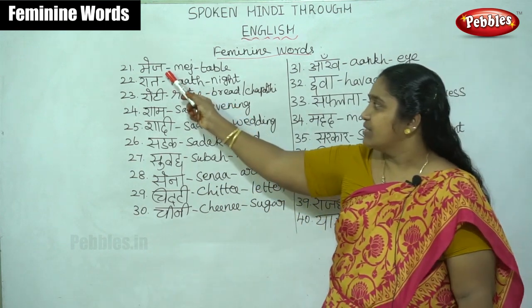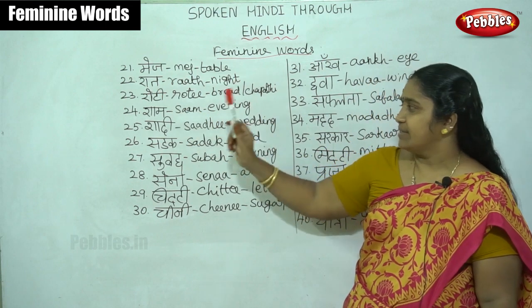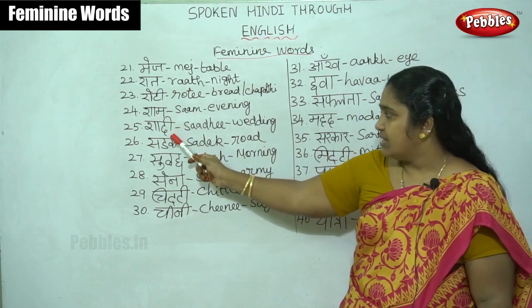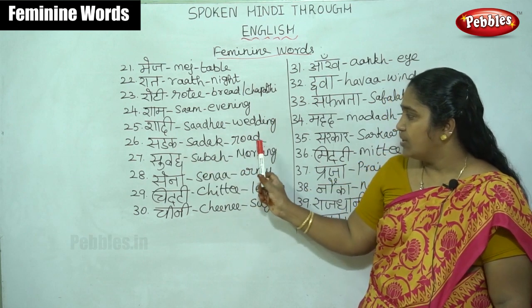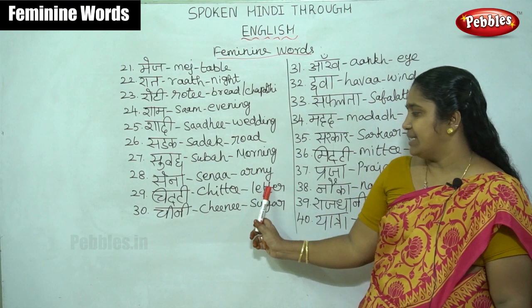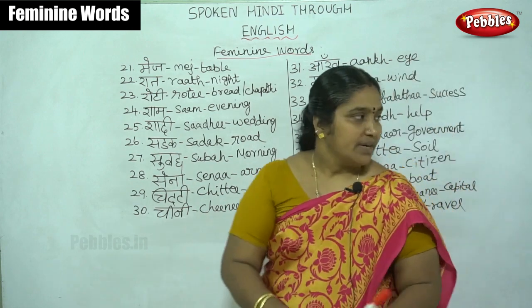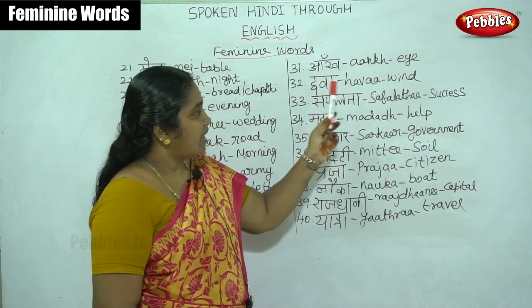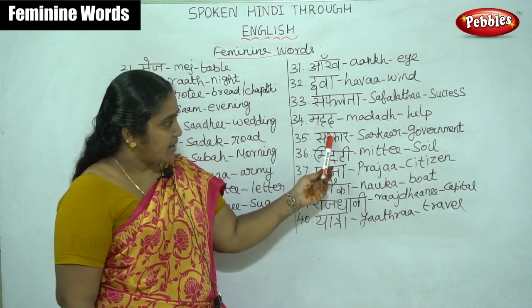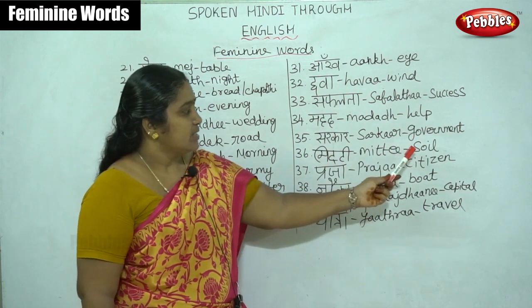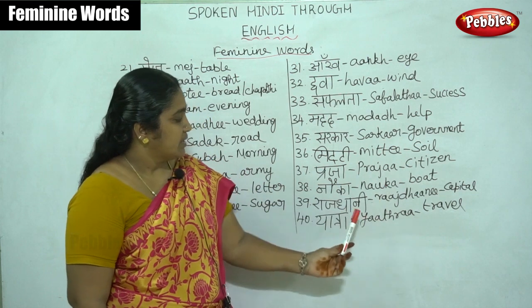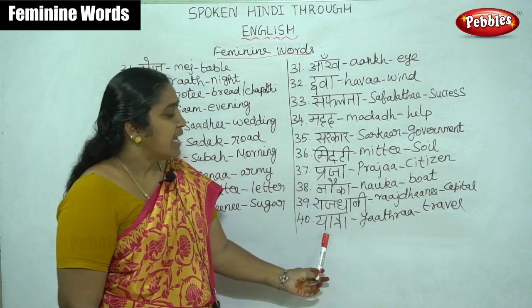Once again, let's review all the feminine words: mage (table), rath (night), roti (chapati), sham (evening), shadi (wedding), sadak (road), subah (morning), sena (army), chitti (letter), chini (sugar), ankh (eye), hava (wind), safalata (success), madad (help), sarkar (government), mitti (soil), praja (citizen), nauka (boat), rajdhani (capital), yatra (travel).